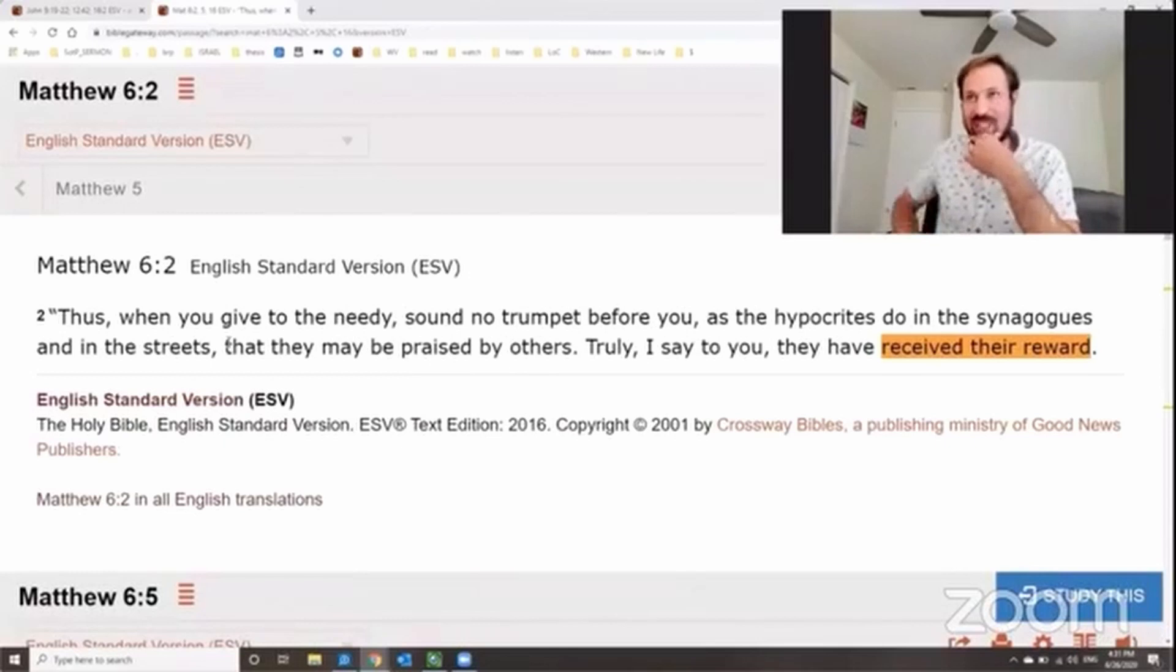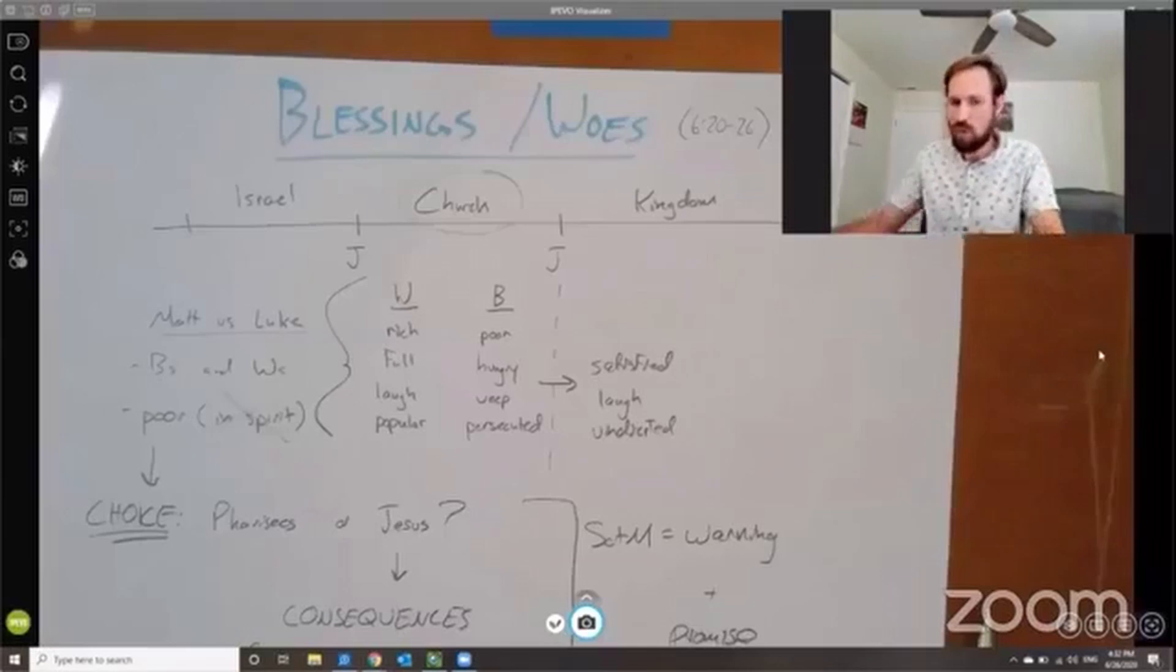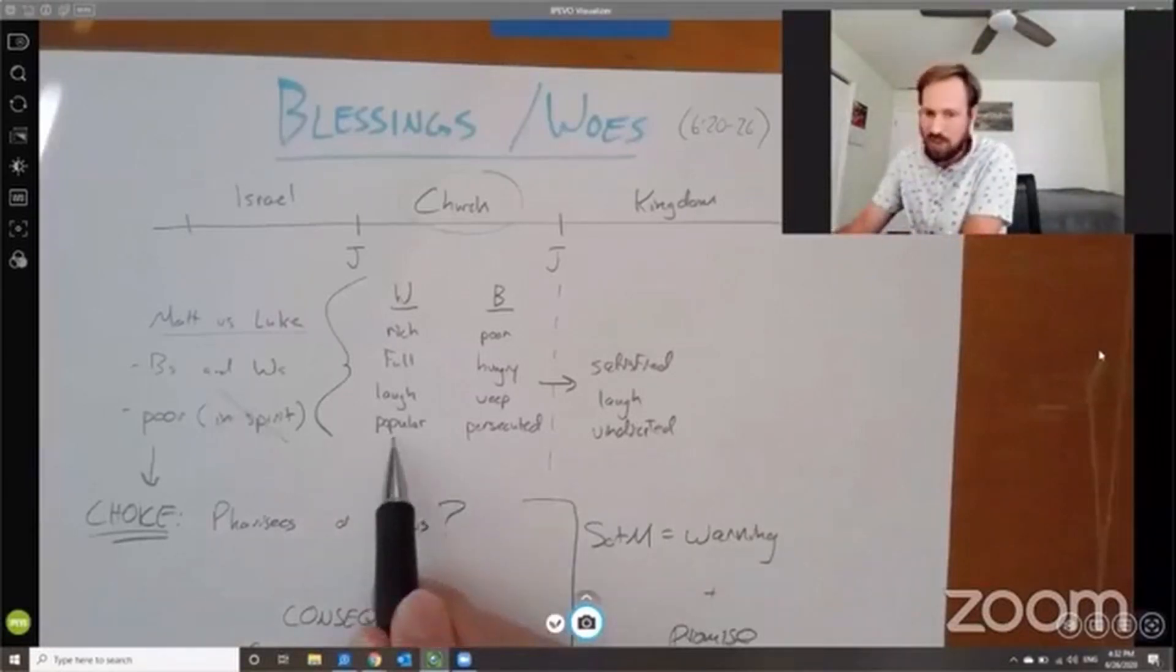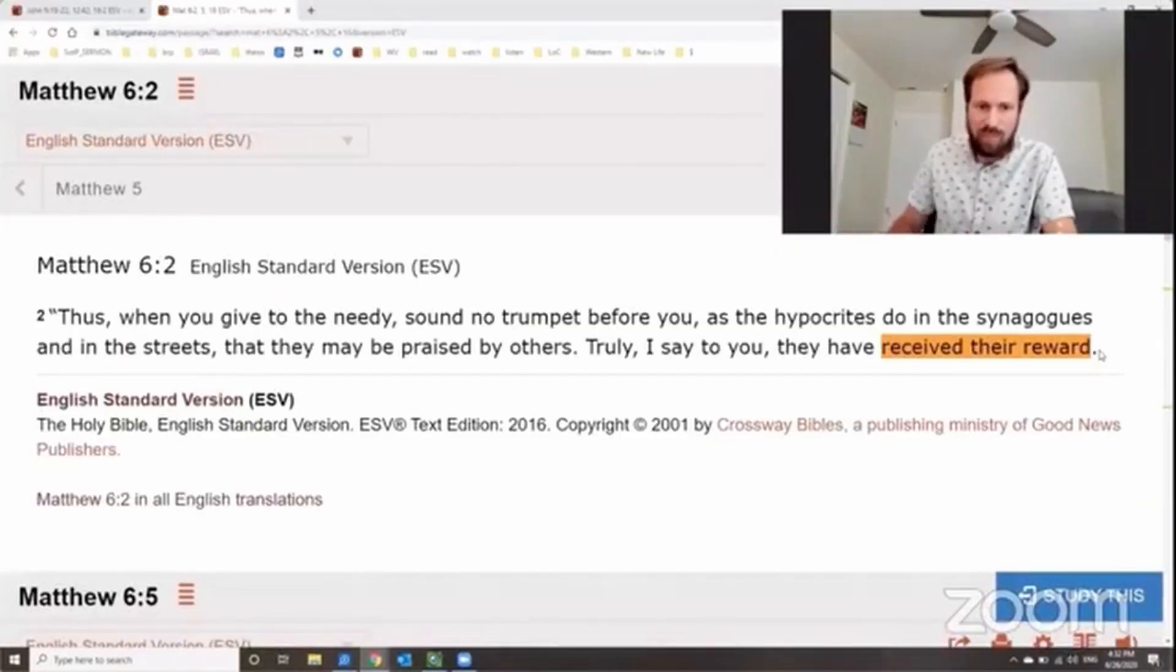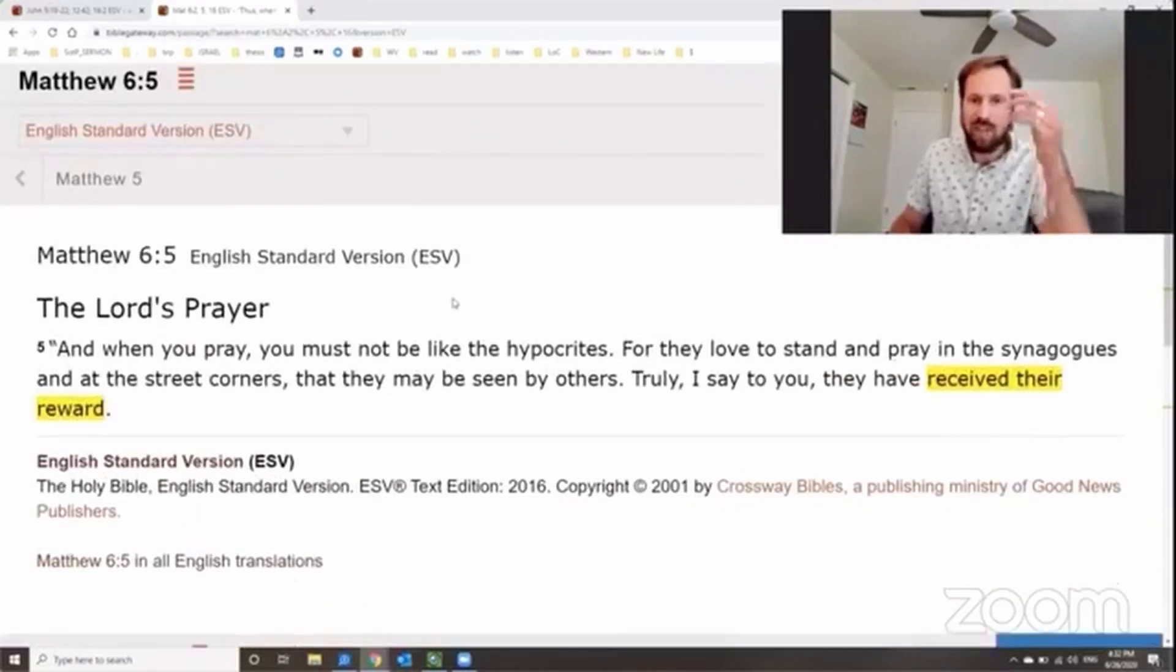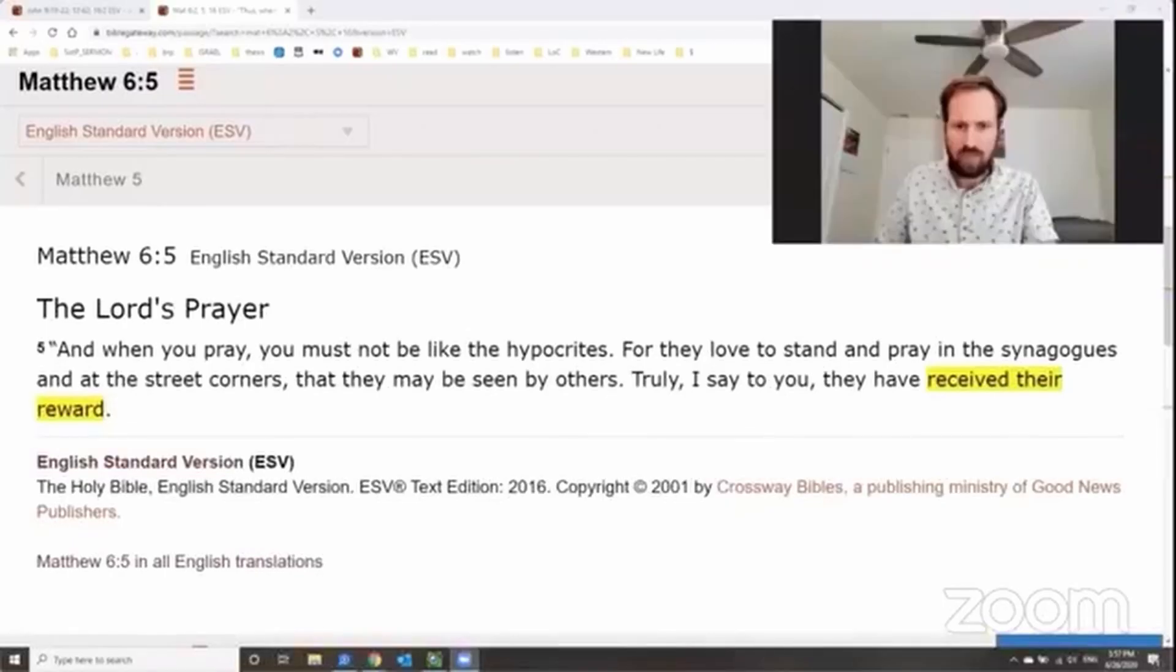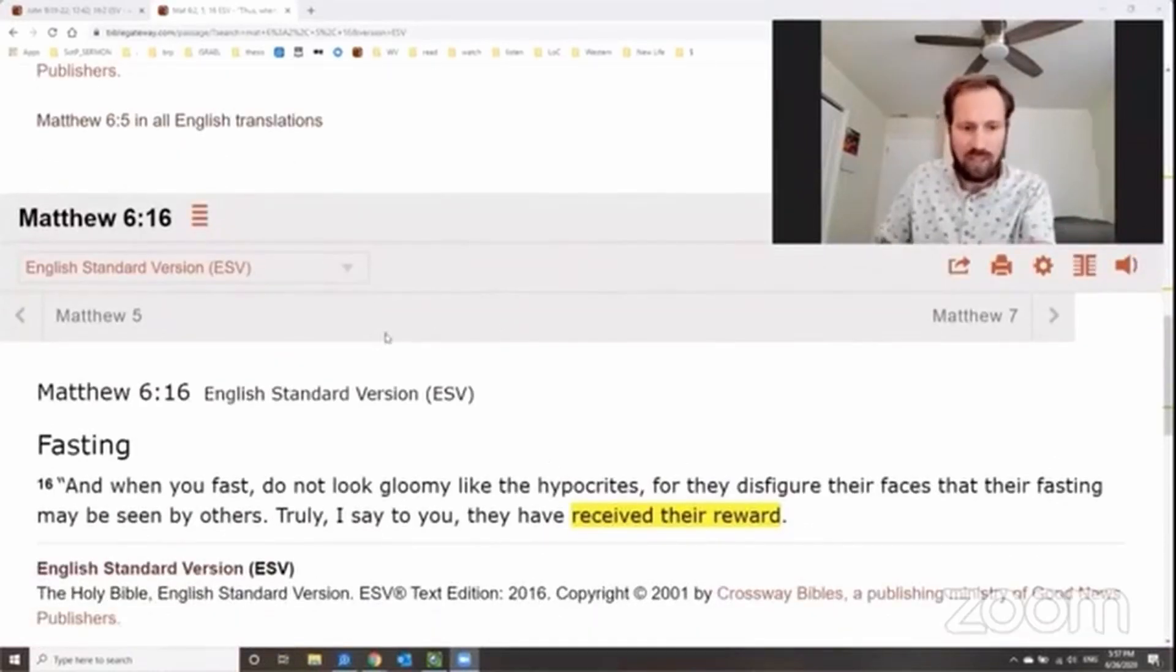And this is how the Pharisees exercise spiritual disciplines. When they give to the needy, how do they get to the needy? They sound a trumpet before them in order that they may be praised by others. And this praise, that is the only reward they're ever going to receive. It's a reward that's limited to this world. There will be no reward for them in the next. And the same thing is true in, in, in two more cases. When they pray, they desire to be seen by others so they can receive their reward. And that's the only reward they're going to receive.